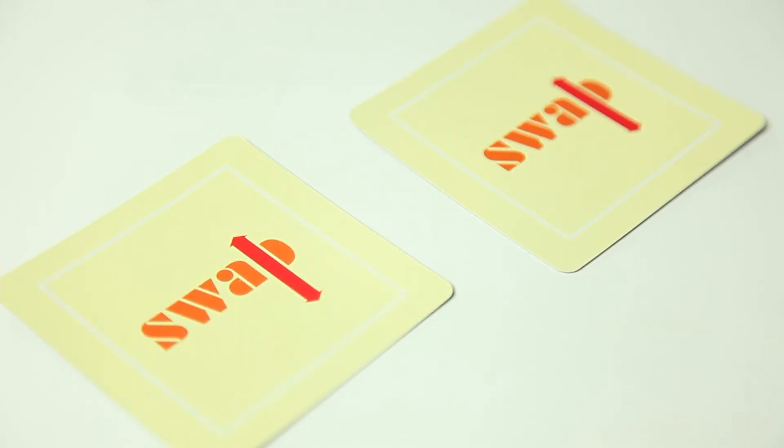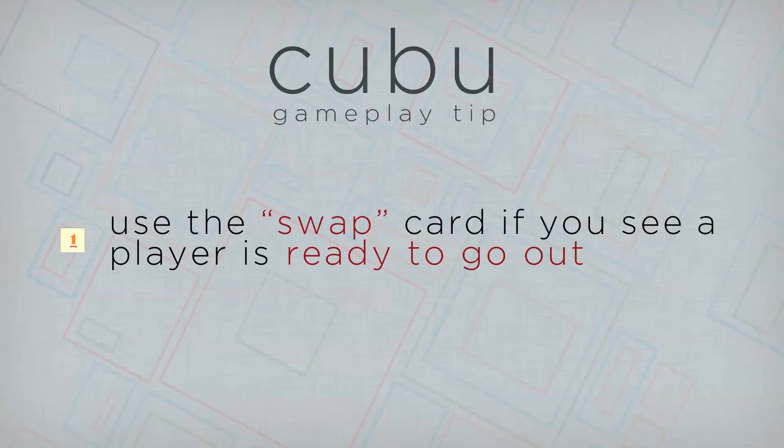Finally we have the swap card. This card you give to any player when it's your turn. You trade your entire hand with a player of your choosing. And this finishes your turn. Here's a tip. Use this if you see a player is almost ready to go out and you're stuck with a lot of cards, you can make them swap cards with you.